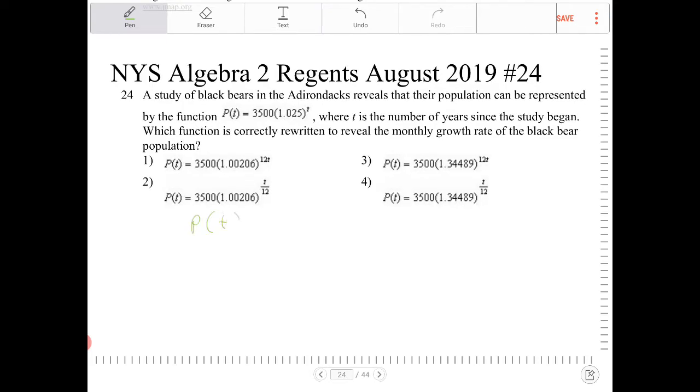So I have 3,500 times 1.025 to the t. This 3,500 is the initial value. This base here reveals what the annual growth rate of growth is, because remember this follows the template of writing the exponential function in this form.